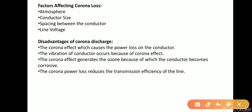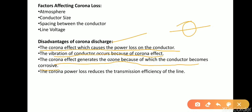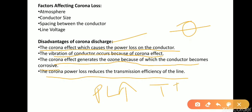Next are the disadvantages of corona discharge. The corona effect causes power loss. Due to corona, vibration of the conductor also occurs. Corona effect generates ozone around the conductor, which makes the conductor corrosive. The corona power loss reduces transmission efficiency — if power loss increases, the power transmission capability and efficiency both reduce.